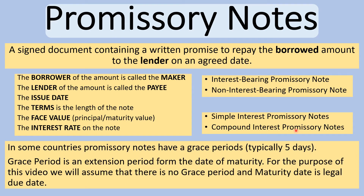Because promissory notes are legal documents, they have a grace period — typically three to five days depending on the country. The grace period is an extension from the date of maturity. For example, if a note matures on January 31st and was issued January 1st, with a five-day grace period you'd have until February 5th to repay. For this video, we'll assume no grace period and that the maturity date is the legal due date.